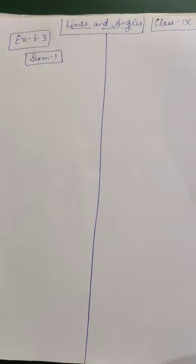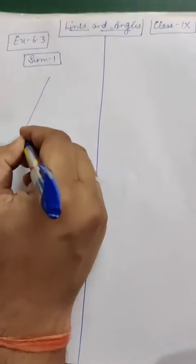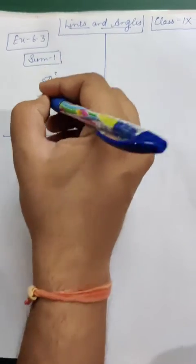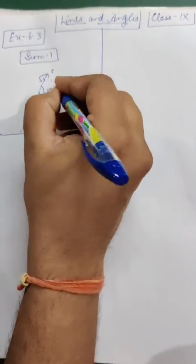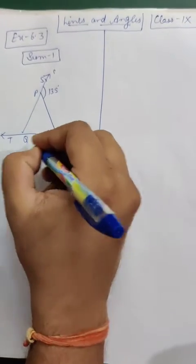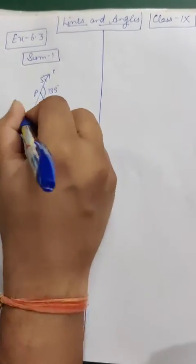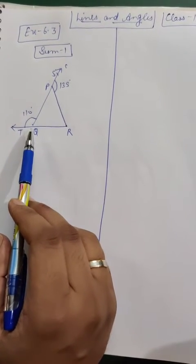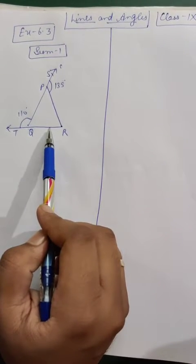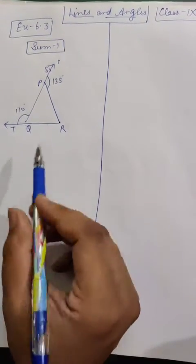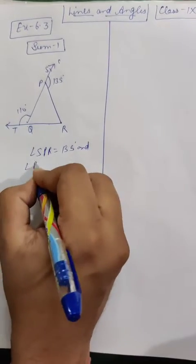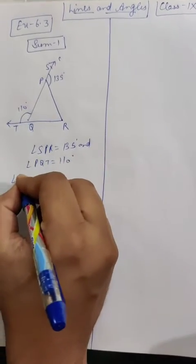Now this is exercise 6.3, sum first. Let's see the given figure. Let's draw the figure first. This is S. This angle is 135 degrees. This is P. Here it is T. This is Q. This is R, and this is 110 degrees. What is given: sides QP and QR of triangle PQR are produced to point S and T respectively. If angle SPR is 135 degrees and angle PQT is 110 degrees, then we have to find angle PRQ.